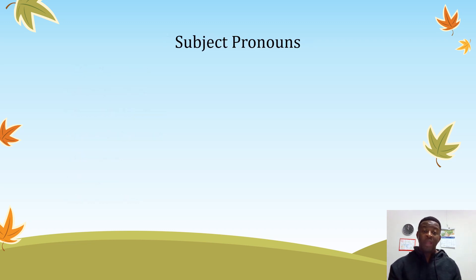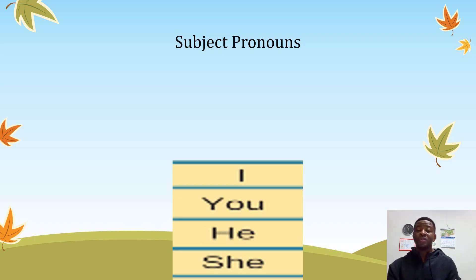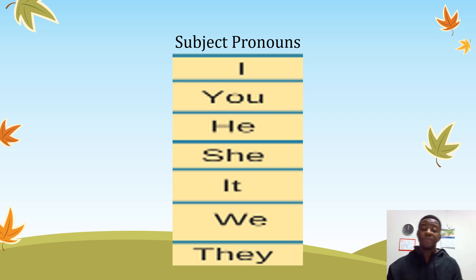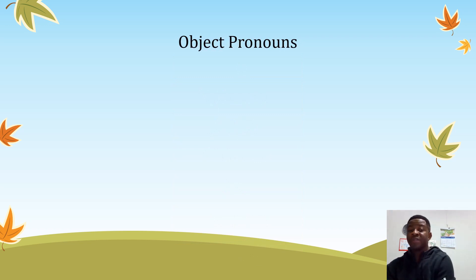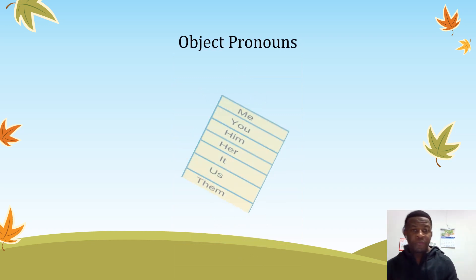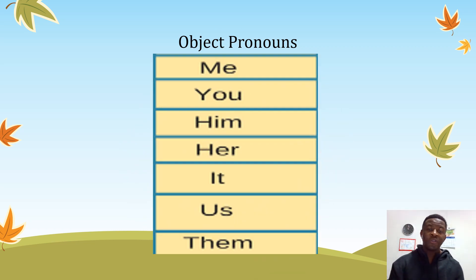Now on to subject pronouns — what do you understand by subject pronouns? In English, subject pronouns are: I, you, he, she, it, we. Now let's talk about object pronouns. For object pronouns we have: me.